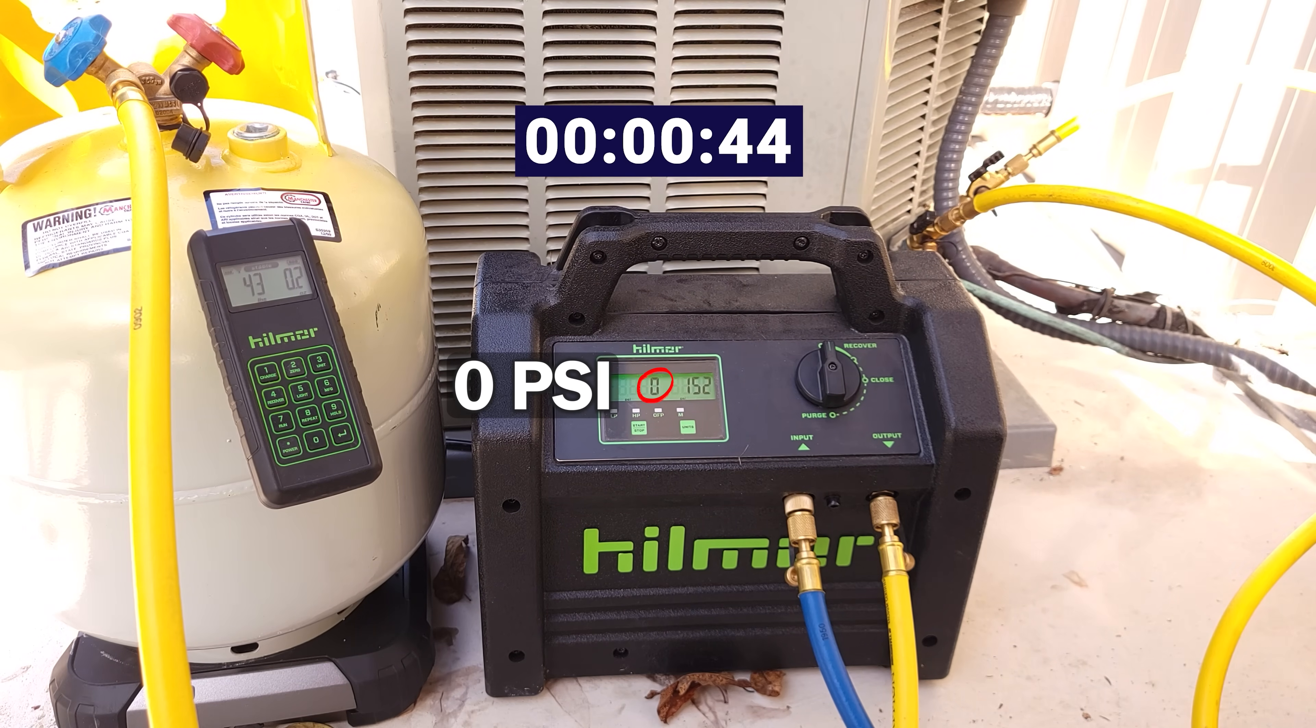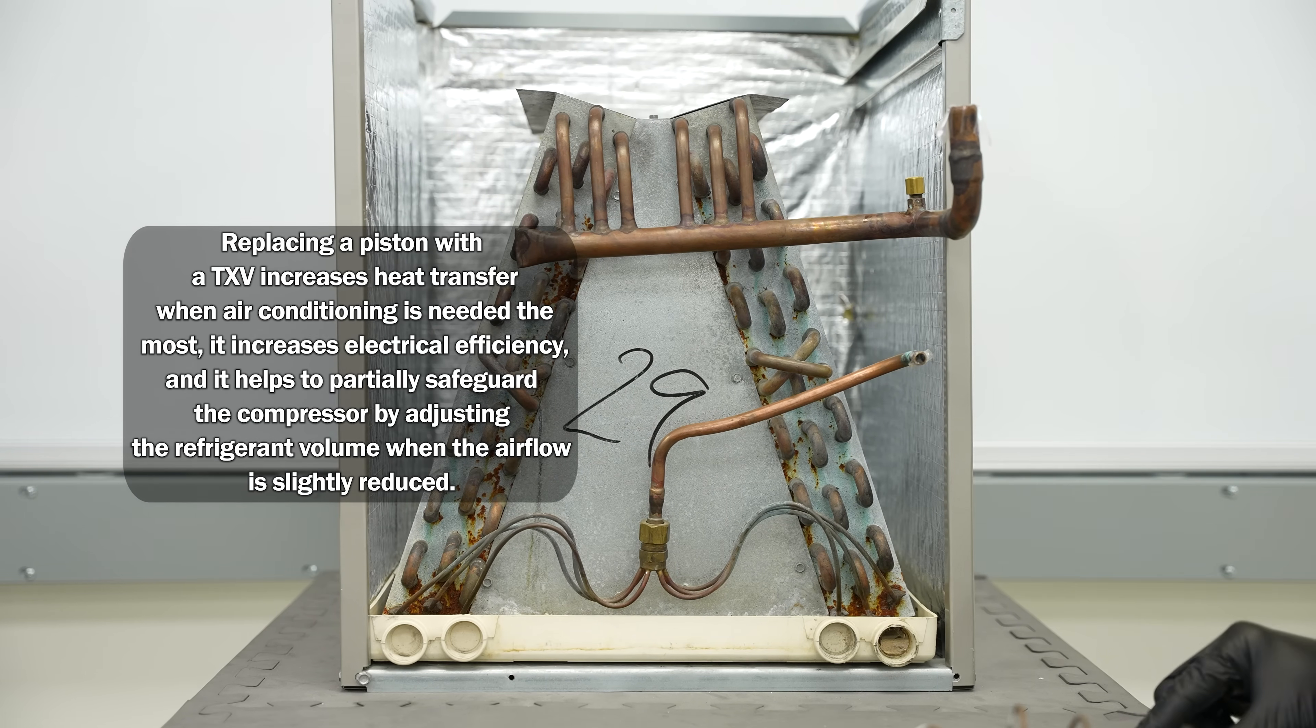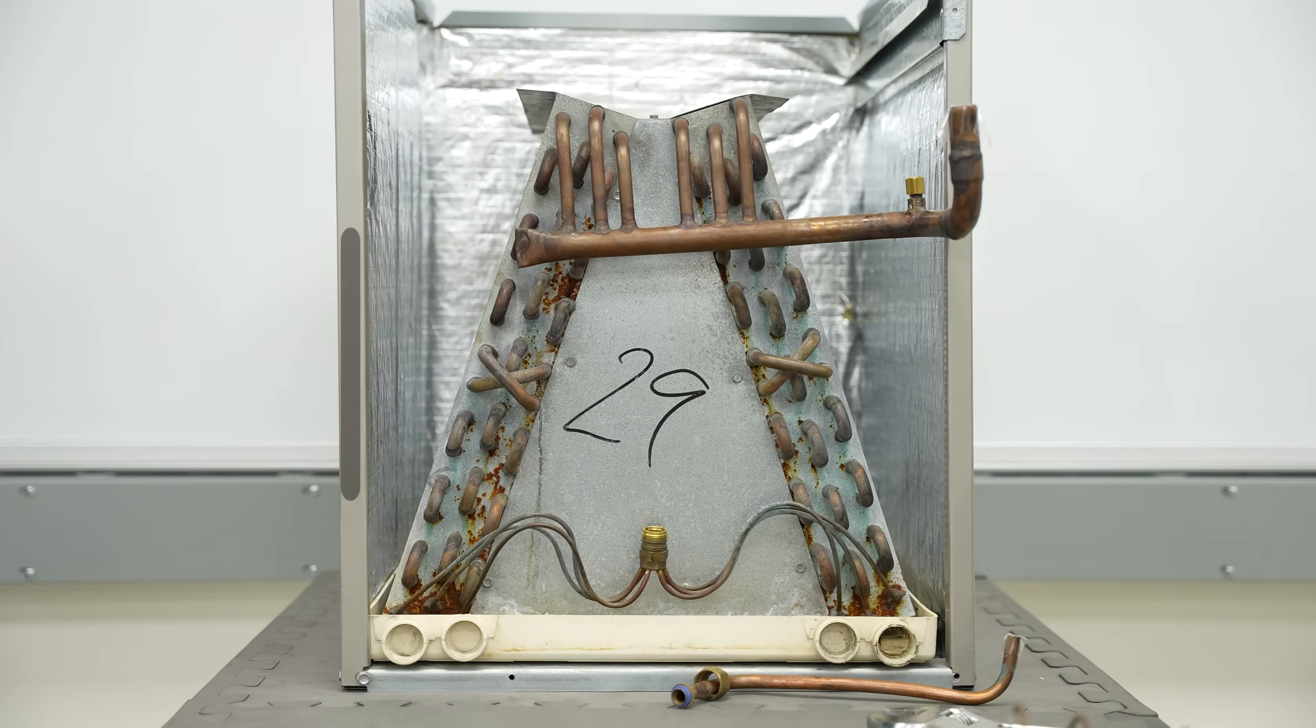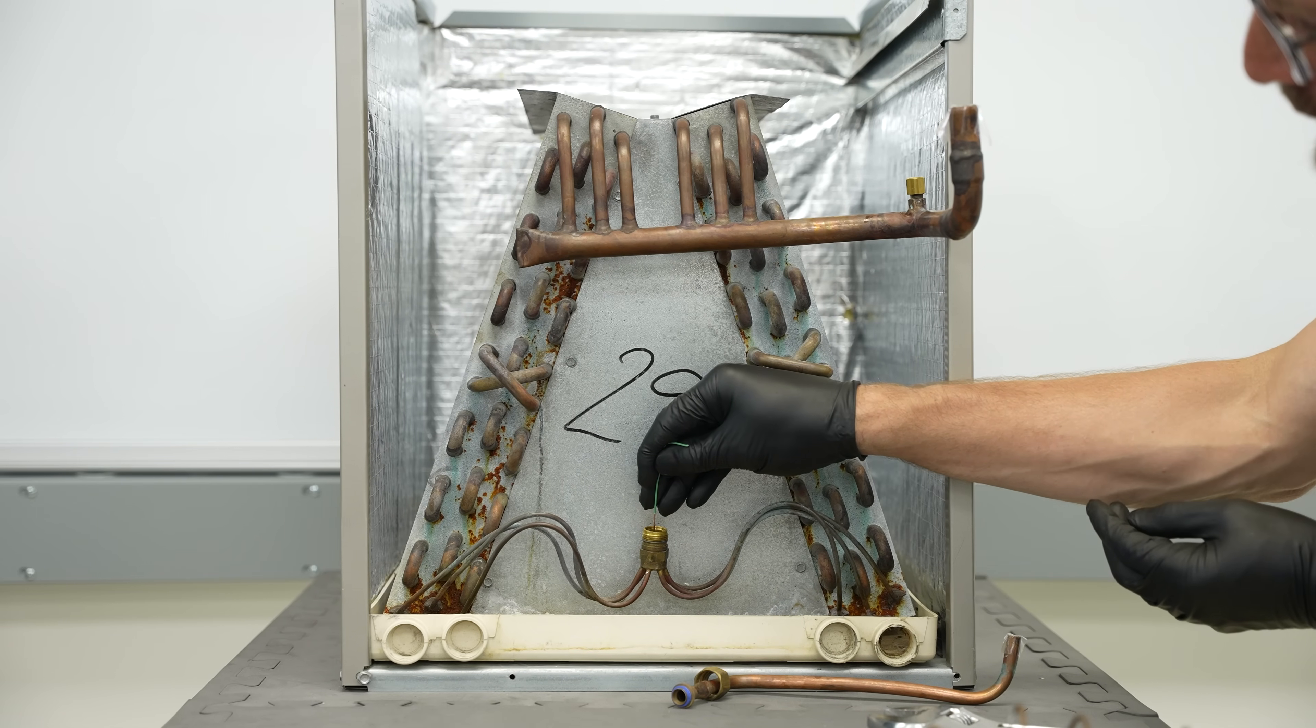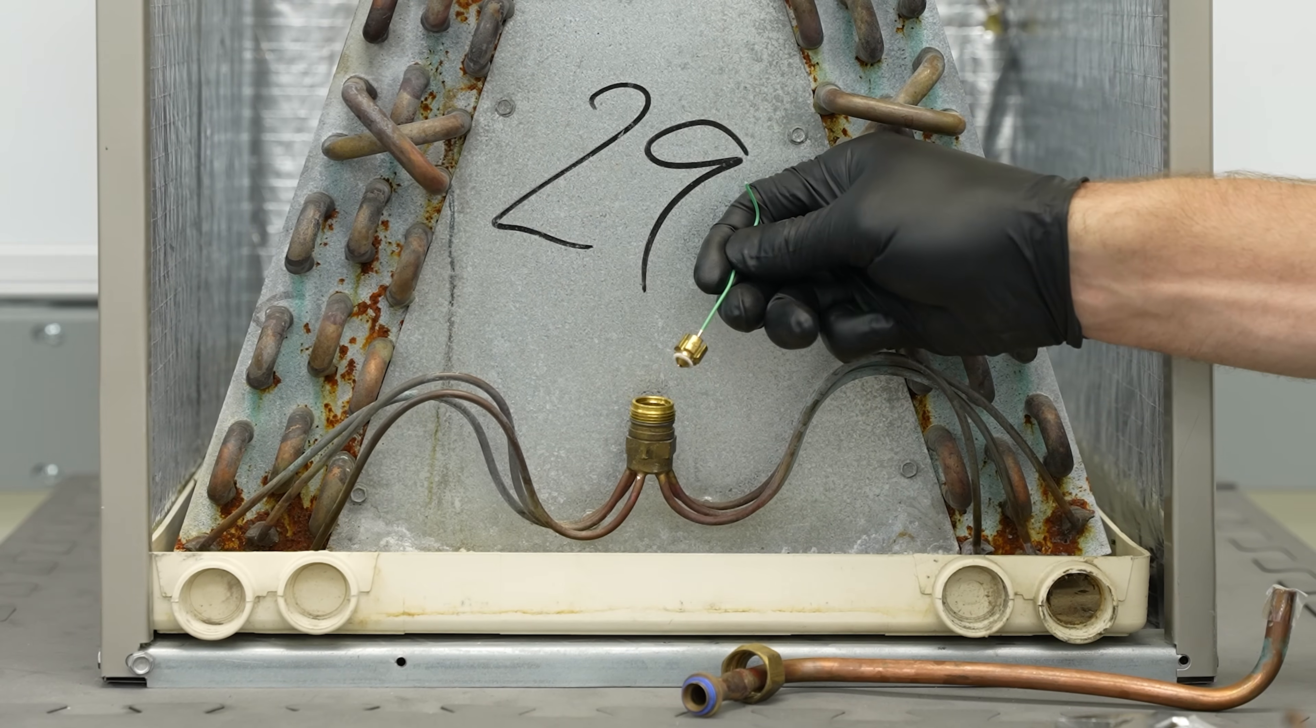After you've recovered the refrigerant down to zero PSI, you can go ahead and disconnect your piston chamber and pull out the piston. Then you can take a piece of thermostat wire with a little bent end on the edge and just pull out the piston. Remove this cap.